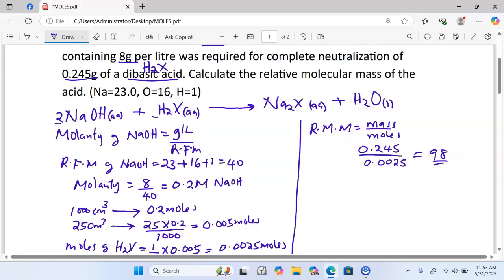And for us to move further and identify the dibasic acid, this dibasic acid will be sulfuric acid. Identity of the dibasic acid will simply be sulfuric acid. And if you sum up all the relative atomic masses of the elements present in sulfuric acid, they will add up to 98.